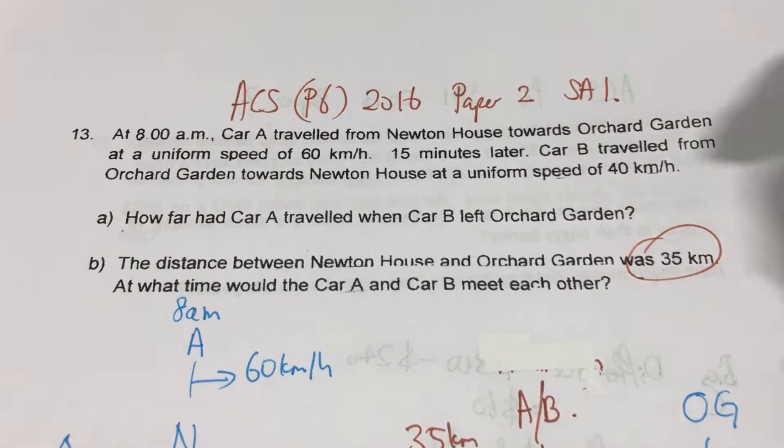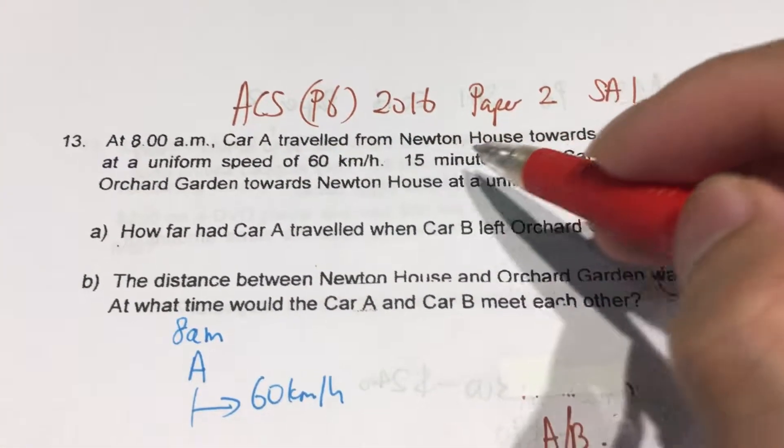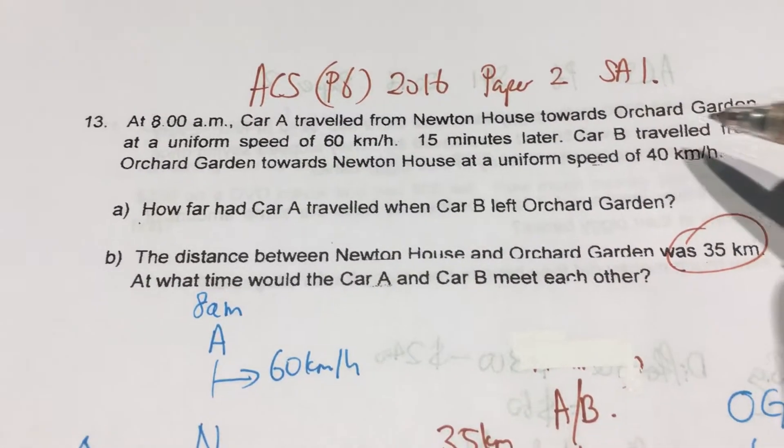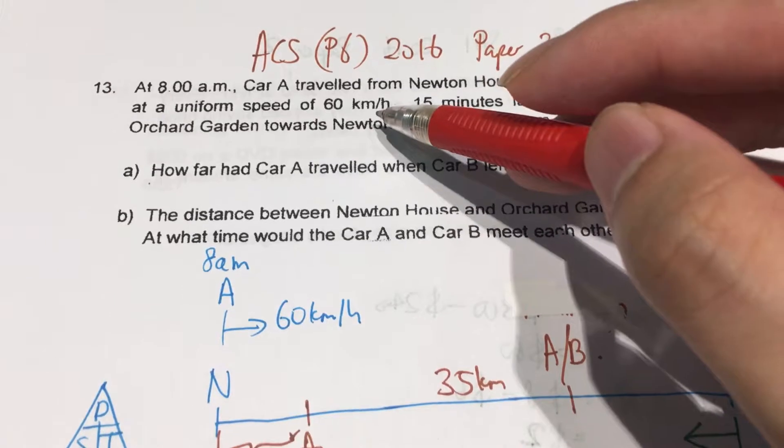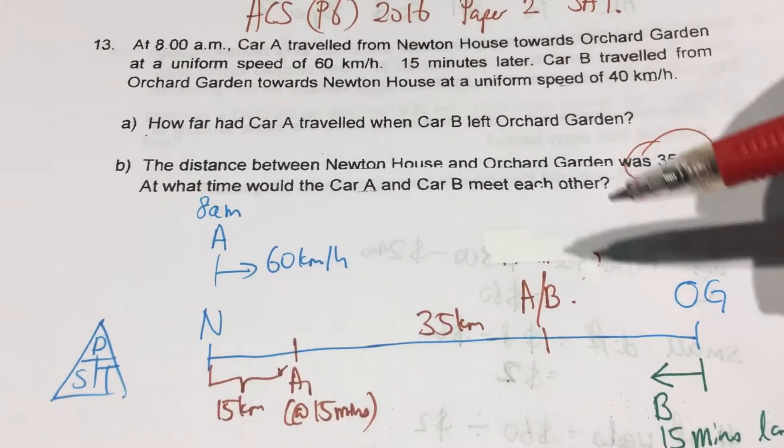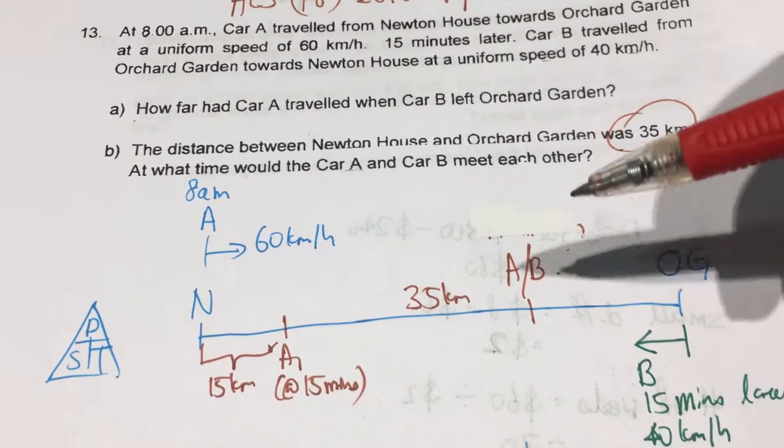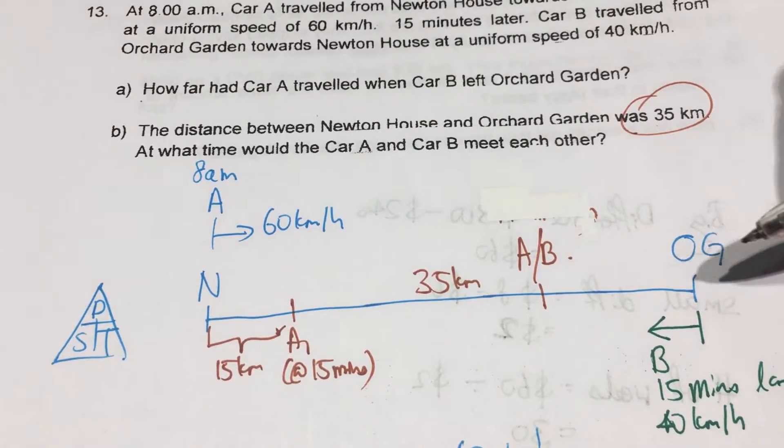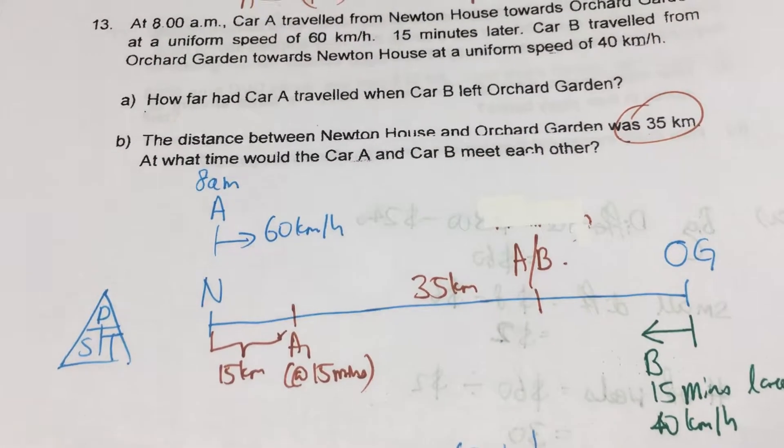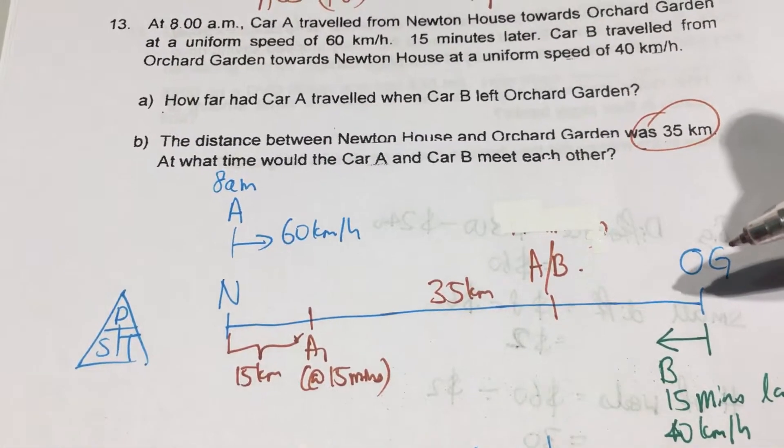In this speed question, at 8am, car A traveled from Newton House towards Orchard Gardens at a uniform speed of 60km per hour. So normally when we see speed question, we want to draw a distance timeline. And remember, you only draw one so that all the information goes into the same distance timeline.